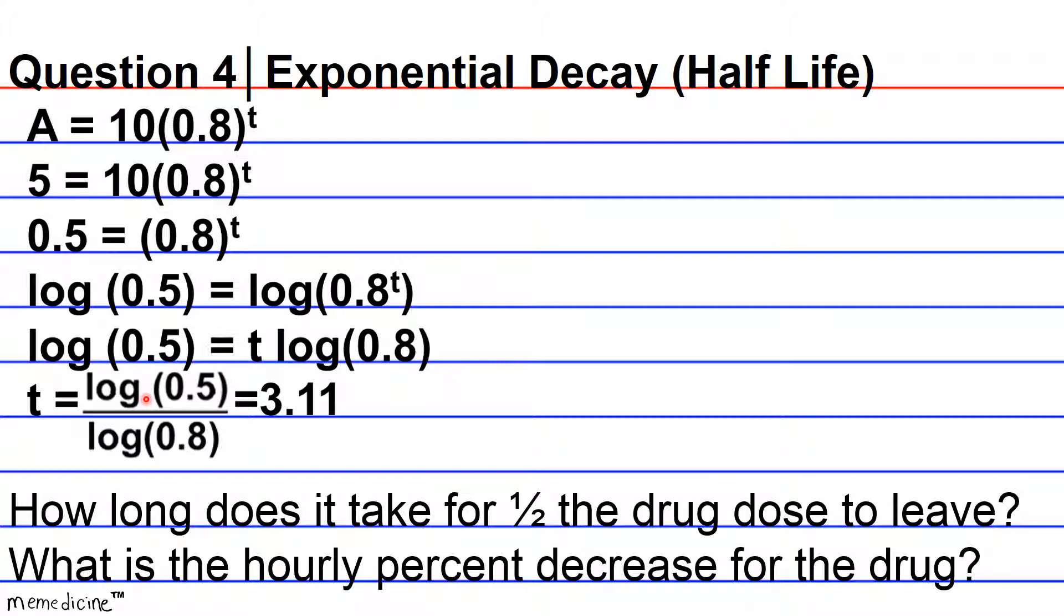As long as we're using a log that has the same base. I think I just confused you. If I did, just scratch what I said. So t is obviously going to be equivalent to log(0.5) divided by log(0.8) that we previously divided both sides by.